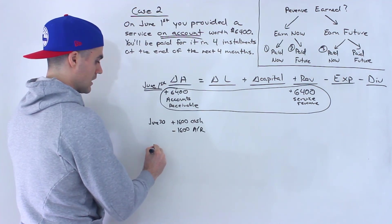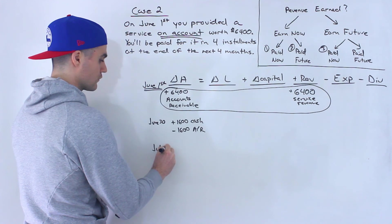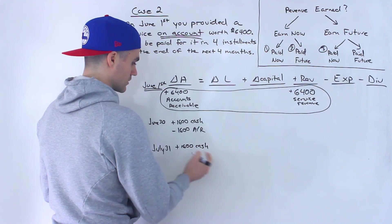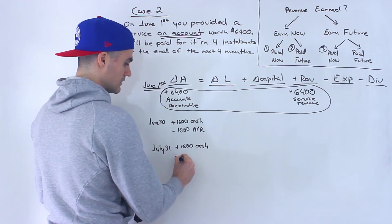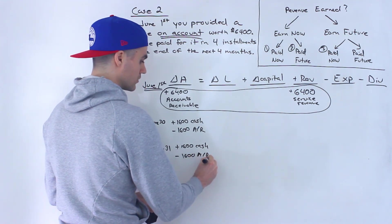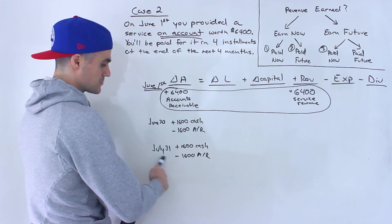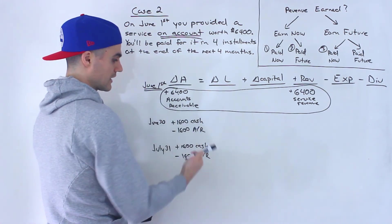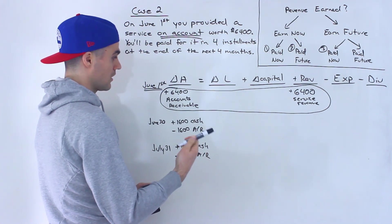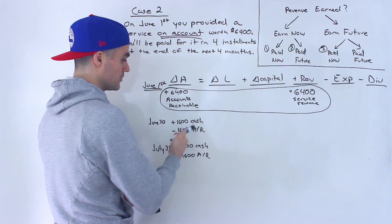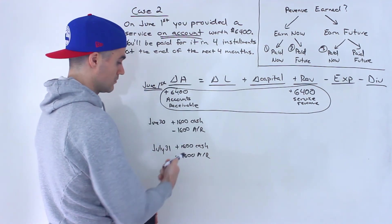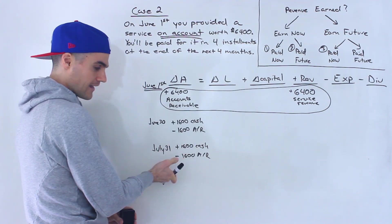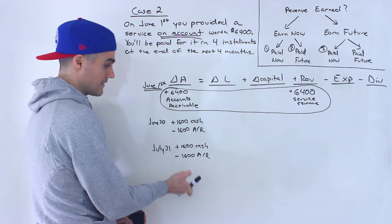Then on July 31st, the same thing: $1,600 cash comes in and accounts receivable goes down by $1,600. At that point — after receiving cash on July 31st — you're still owed $3,200, so accounts receivable is $3,200 on the balance sheet. That makes sense because you started with $6,400 and it went down by $1,600 twice.